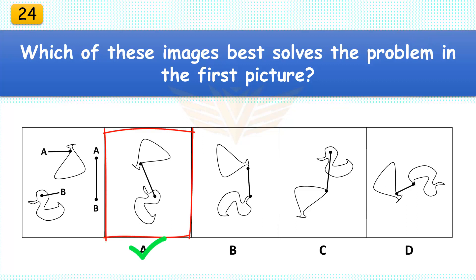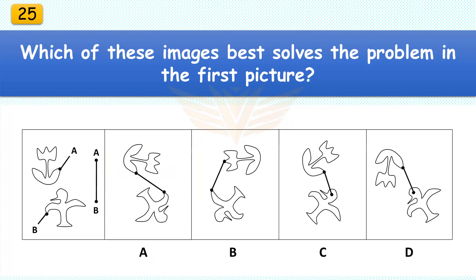Which of these images best solves the problem in the first picture? The correct answer is A. Rotate the potion flask just over 90 degrees and then rotate the rubber ducky 90 degrees.